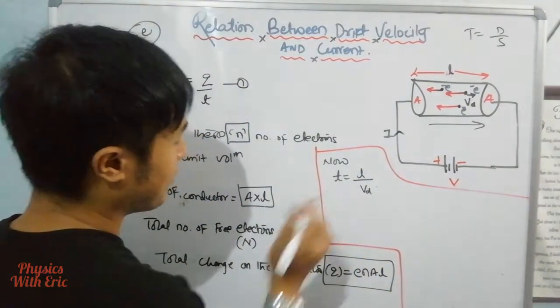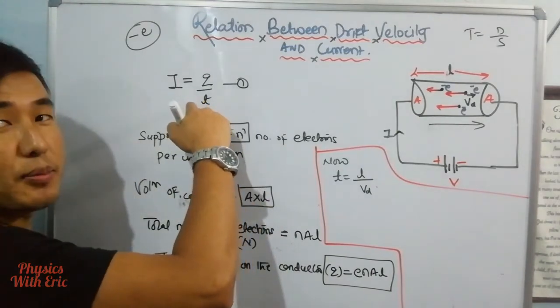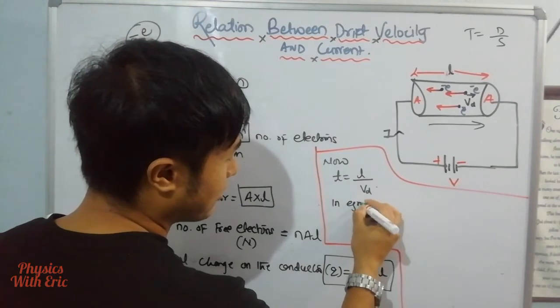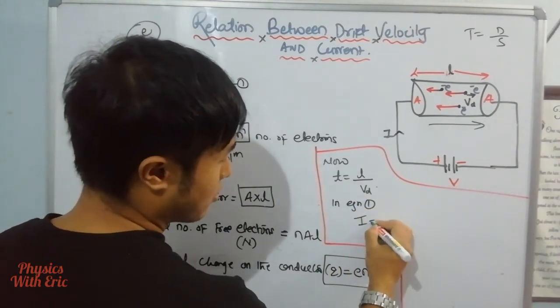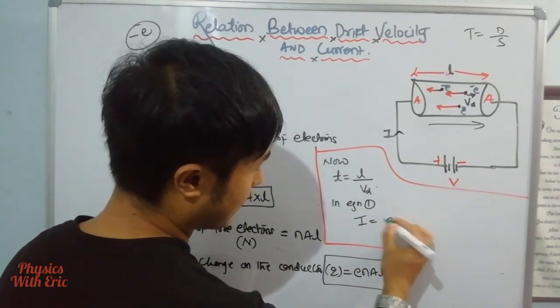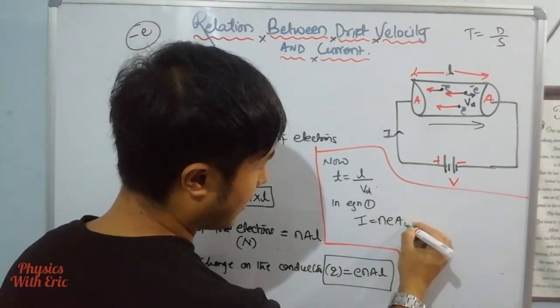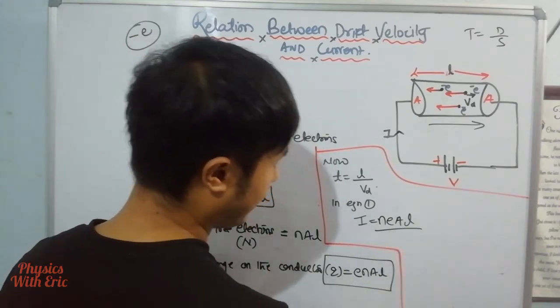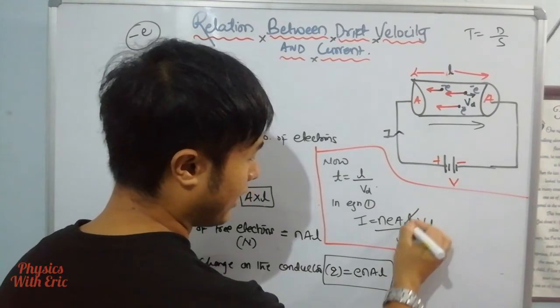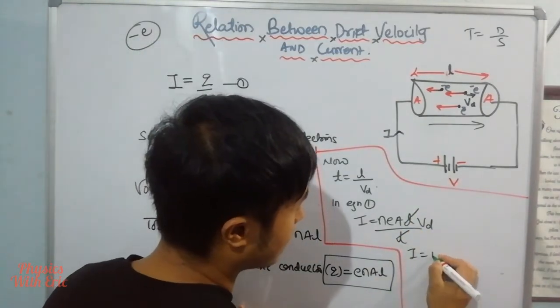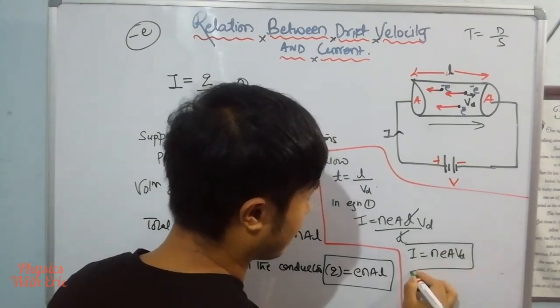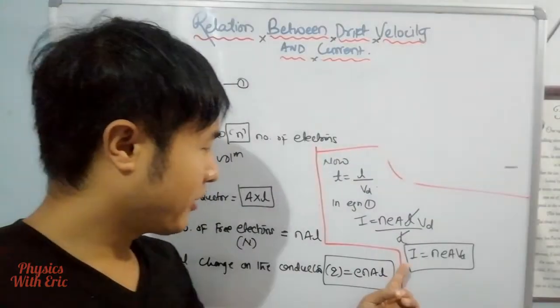Now putting this into equation one: I equals Q by t, so I equals n e A L divided by L by Vd. The L cancels out, so I equals n e A Vd. This is the relationship between current and drift velocity.